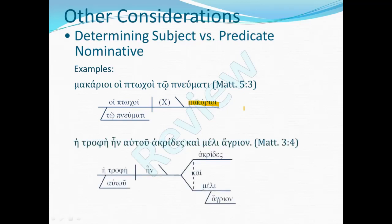Another example we considered was from Matthew 3.4, referring to John the Baptist: 'His food was locusts and wild honey.' We could take the mechanical approach and notice that the noun trophē has the article. The series of nouns akridis and meli lack the article and therefore are much more likely to be the predicate. Here Wallace's guidance works fairly well — there has been discussion about John's lifestyle, so trophē correlates with the known information, and the locusts and wild honey are the new information being added in this clause.